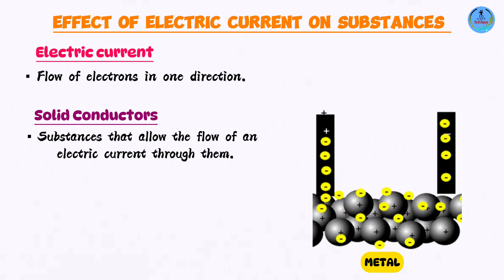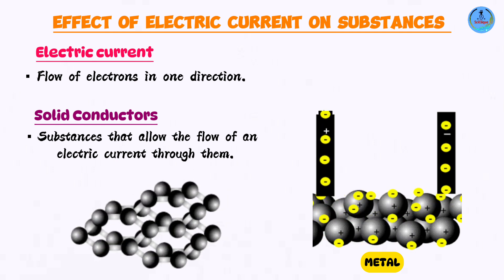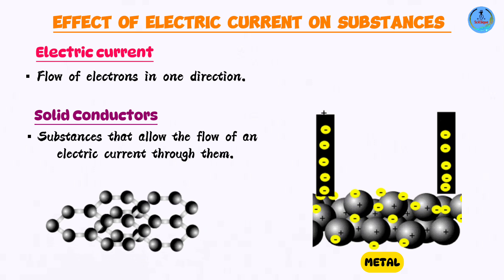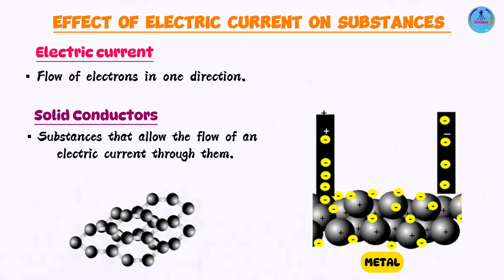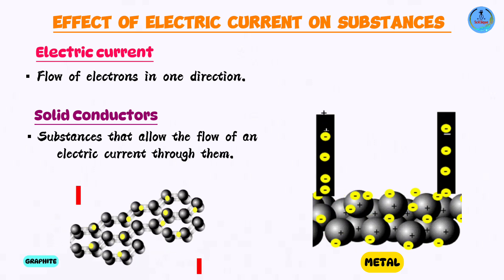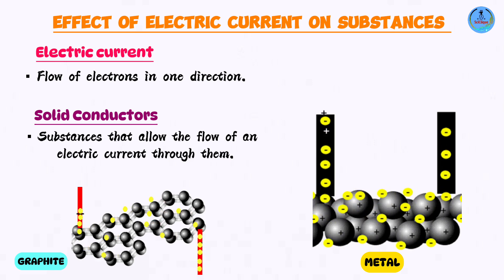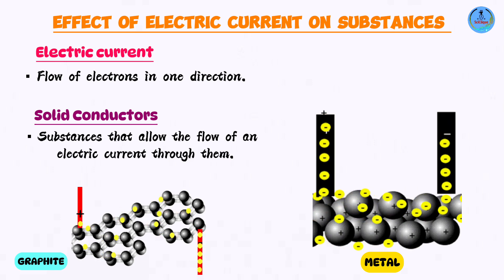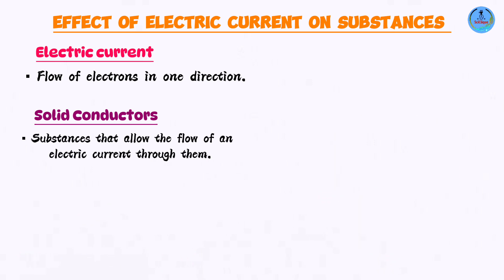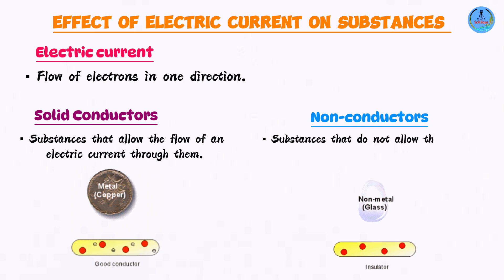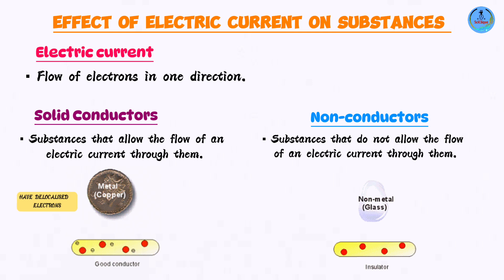There is also another substance that is not a metal, but also contains delocalized electrons and is therefore a good conductor of electricity — and that is graphite. Which are the non-conductors? Everything else remaining — rubber, glass, plastic, etc. All of these solid substances are non-conductors.